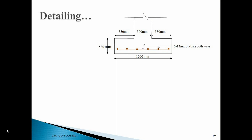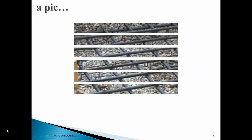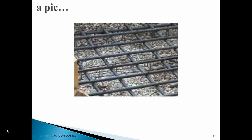Here comes the detailing part. This is the sectional arrangement showing the footing dimensions and the distribution of reinforcement along both directions. Similarly, the arrangement is shown in plan. This sample picture shows how the arrangement of reinforcement is done — this is not our footing, but is intended to show only the general arrangement of reinforcement.